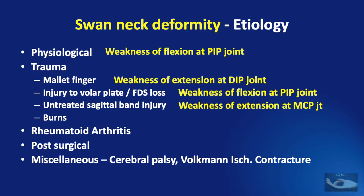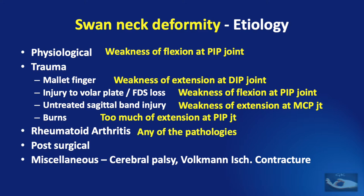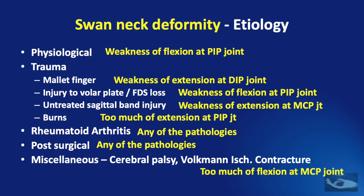In burns, when there is a scar over the dorsal aspect of the proximal interphalangeal joint, this scar causes too much extension at the proximal interphalangeal joint, which results in the swan neck deformity. Rheumatoid arthritis can affect any of the joints. Post-surgical conditions like harvest of the flexor digitorum superficialis or too tight tensioning of the claw correction can also be caused by involvement of the mechanics of different joints. In conditions like cerebral palsy and Volkmann's ischemic contracture, it is the contracture of the intrinsic muscles that causes too much flexion at the metacarpophalangeal joint.